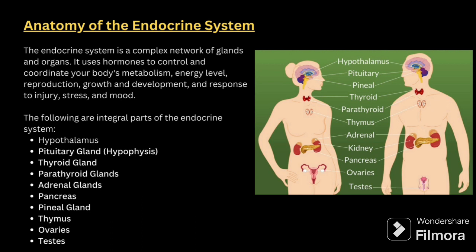The first one is hypothalamus, second is pituitary gland, third is thyroid gland, fourth is parathyroid gland, fifth is adrenal gland, sixth is pancreas, seventh is pineal gland, eighth is thymus, ninth is ovaries and tenth is testes. These are the integral parts of the endocrine system. Make sure you talk about all ten parts.